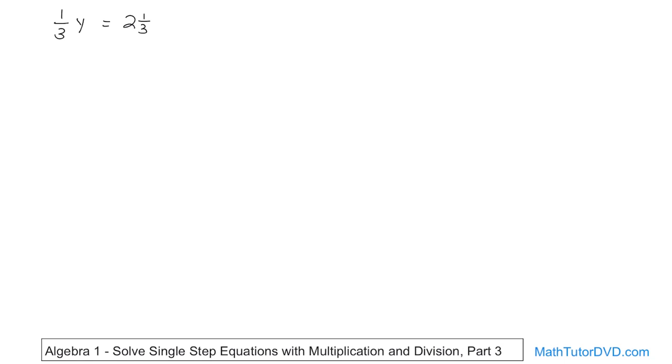So here we have one-third times y is equal to two and one-thirds. Now this really confuses a lot of students. What do you do when you have a mixed number like that, a mixed fraction? Well, there's lots of ways you can handle it. What I'm going to tell you to do is convert this to an improper fraction. It's almost always easier that way.